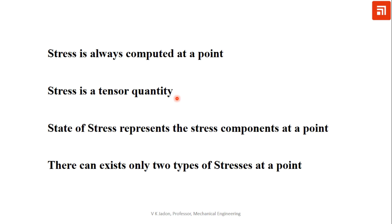A scalar requires only magnitude — no additional parameter — so it is a zero-order tensor. A vector needs direction along with magnitude, so it is a first-order tensor. Stress is a second-order tensor because it needs magnitude, direction, and the plane on which that stress is acting.